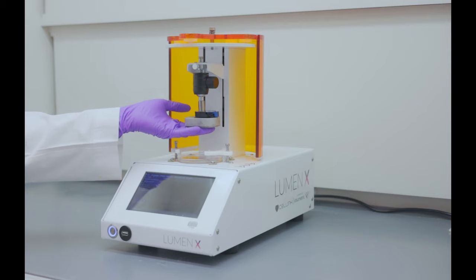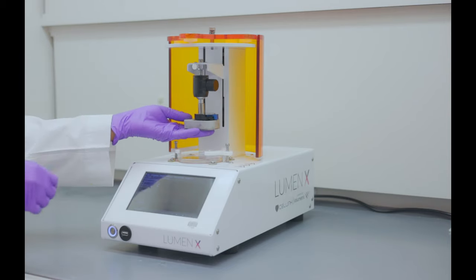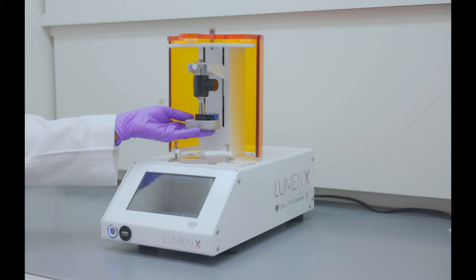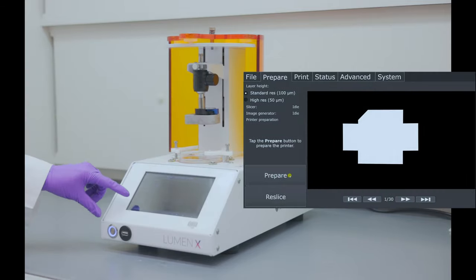Next, to prepare the build platform, loosen the metal screw while holding the build platform from the bottom. Now, the build platform can move freely in the Z axis. Push the build platform all the way up and tighten the screw.